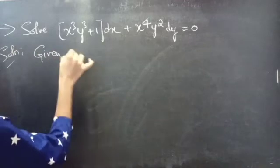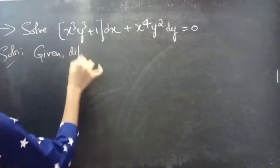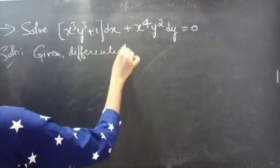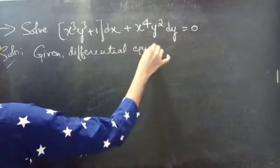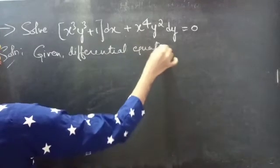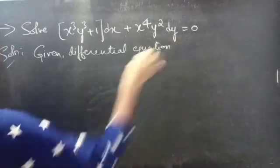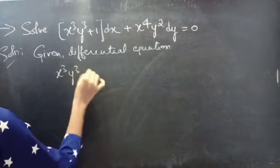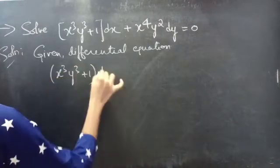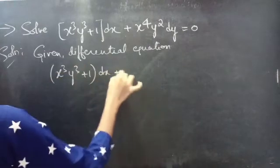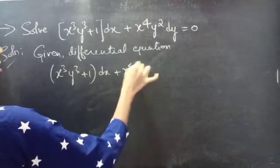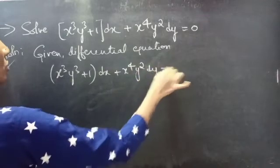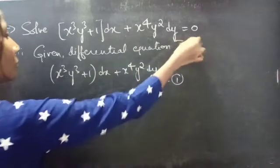Given differential equation: x-cubed y-cubed plus 1 into dx plus x to the power 4 y-squared into dy equals 0. Consider that as equation number 1.